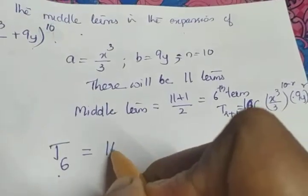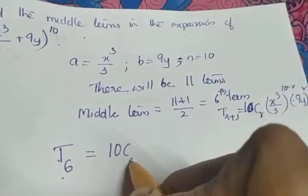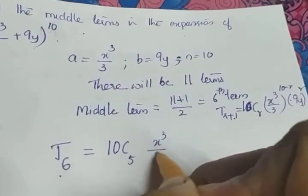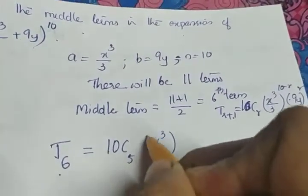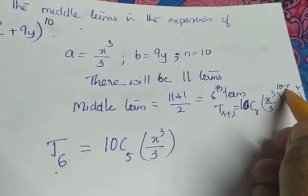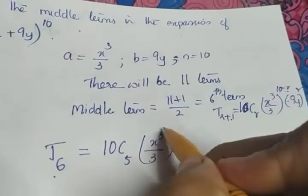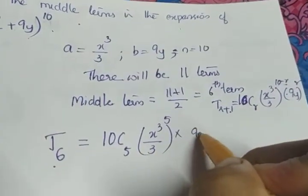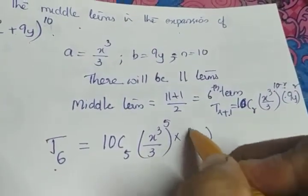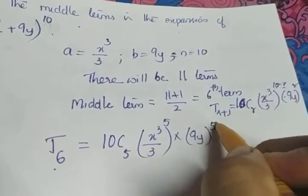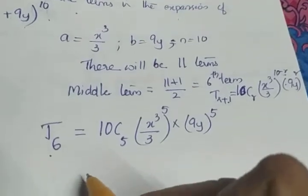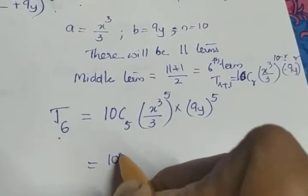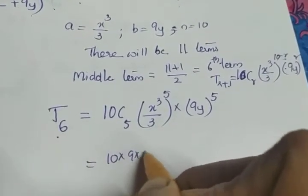r is 5, so T6 = 10C5 × (x³/3)^(10−5) × (9y)^5. That is 10C5 × (x³/3)^5 × (9y)^5.